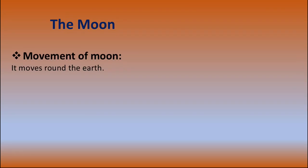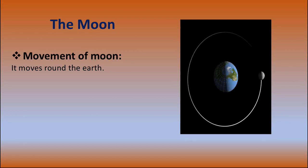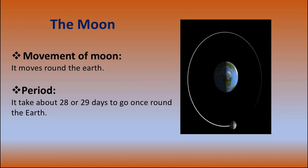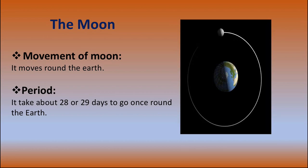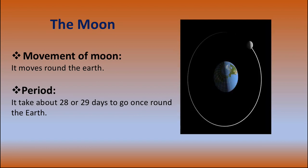Movement of the moon — it moves around the Earth. You can see how the moon is completing the circle around the Earth. It takes about 28 or 29 days to go once around the Earth, which is approximately four weeks. If you count it in weeks there are four weeks; if you count in days it takes about twenty-eight or twenty-nine days to go once around the Earth.